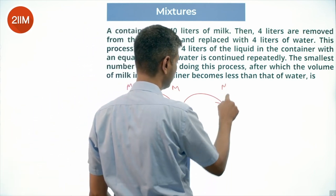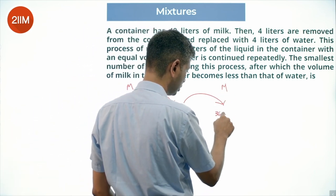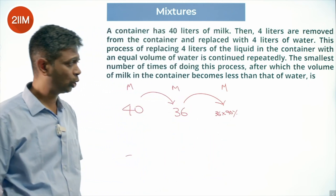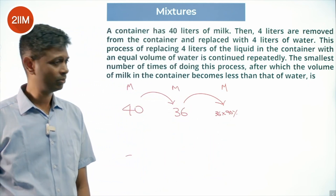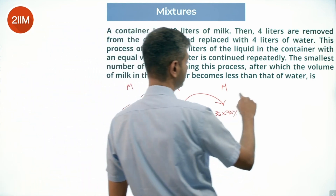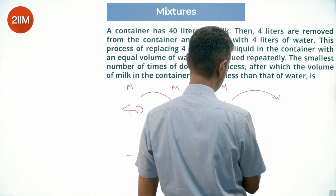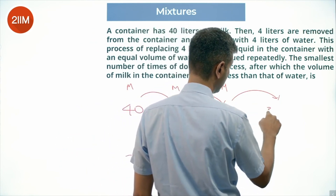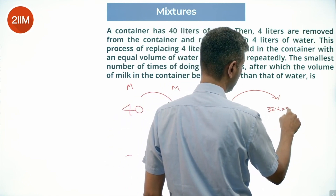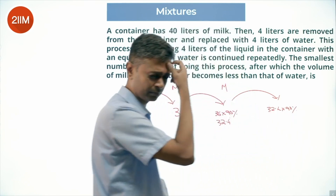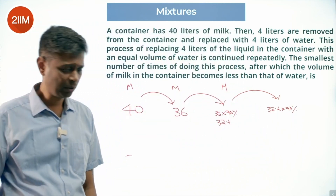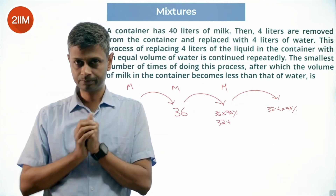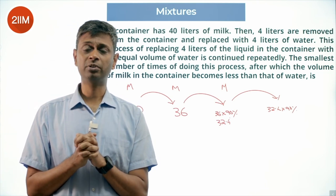How much milk will be retained? 36 into 90 percent. After doing it twice, I am on to something here. If I do one more time, this number 36 into 90 percent is 32.4, then 32.4 into 90 percent. Every time I do this process, I retain 90 percent of the milk I began with. Whatever milk I have, 90 percent of that I will have next.